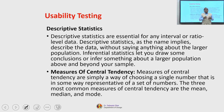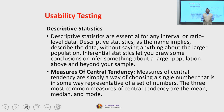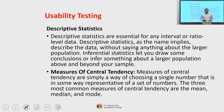Inferential statistics let you draw conclusions or infer something about a larger population above and beyond your sample. While descriptive statistics allows us to understand the nature of the sample, using samples to extrapolate the population parameter is what we term inferential statistics. It allows us to infer about the population parameter using measures of central tendency.